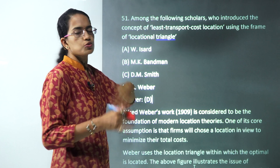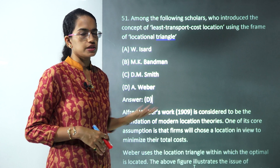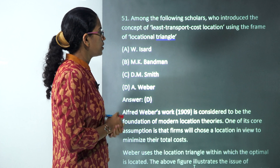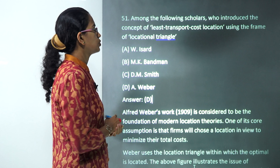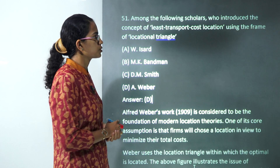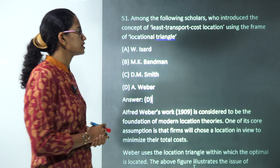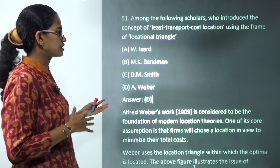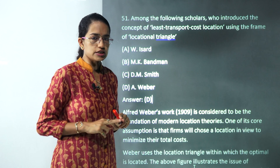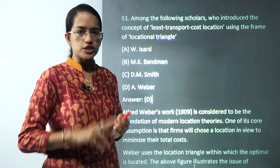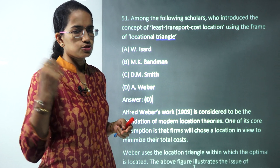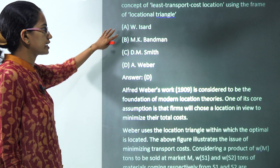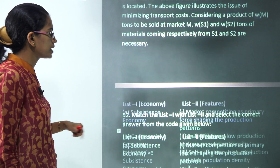Coming on to the first question, it was direct — least transport cost location and the locational triangle was given by Weber. There were two questions on Weber and two questions on Christaller, so these theories again become very very important. The correct answer here would be Weber.